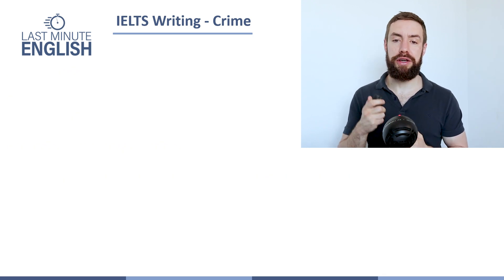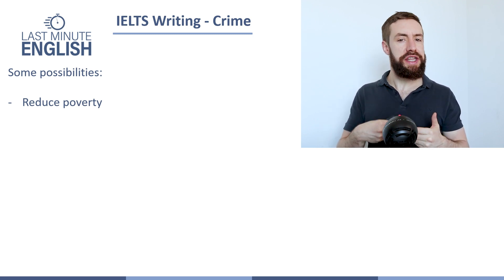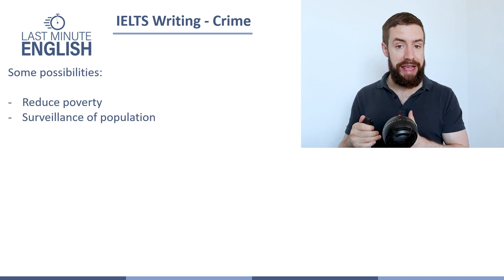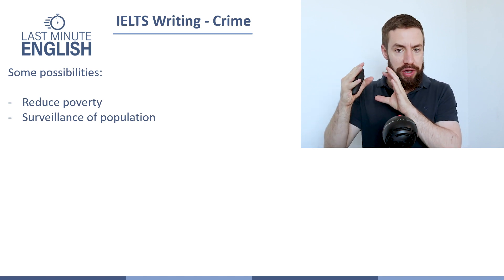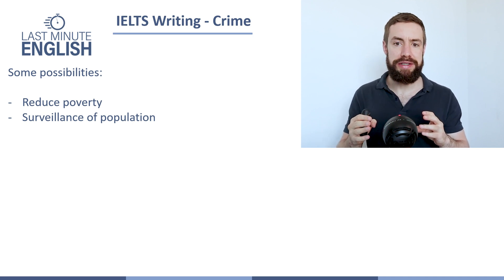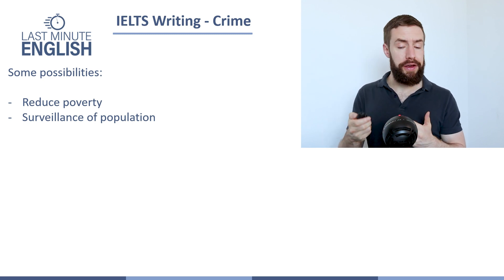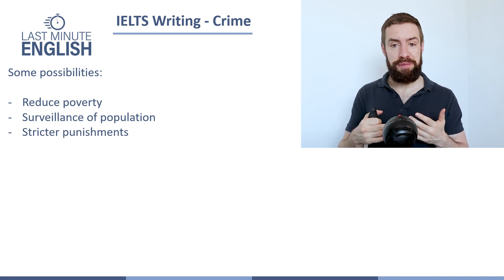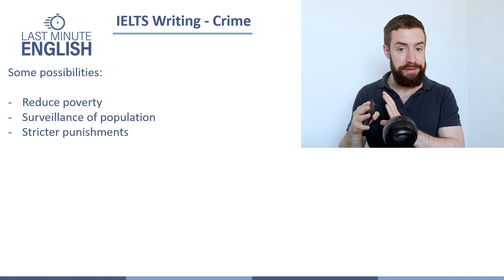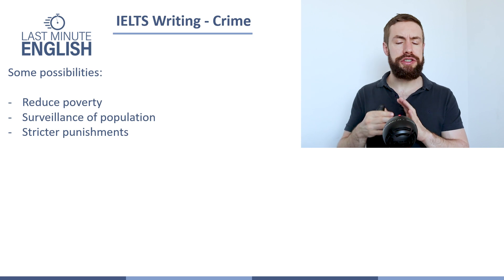Some possible ideas: the first one would be reducing poverty. If we reduce poverty, we reduce the need for people to commit crime, and the crime rate goes down. Or we could do more surveillance of the whole population — more cameras, more police, checking emails and messages — all of those things to find more criminal activity, which will also reduce the crime rate. A third idea could be stricter punishments. If people know they're considering committing a crime but the punishment is very strict, they might decide not to do it, which would also reduce crime.